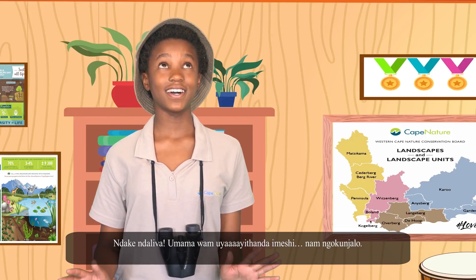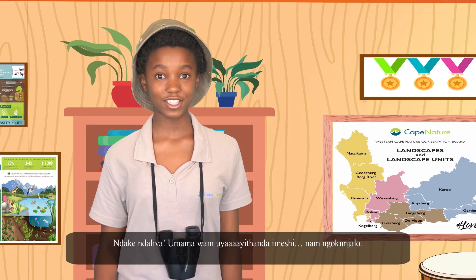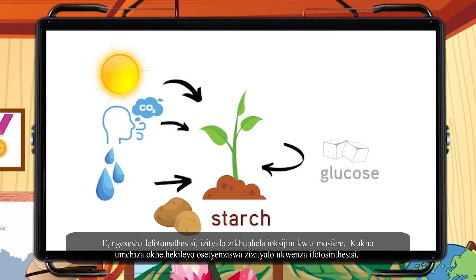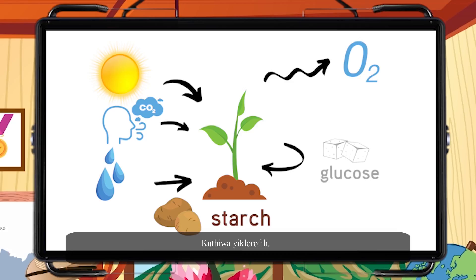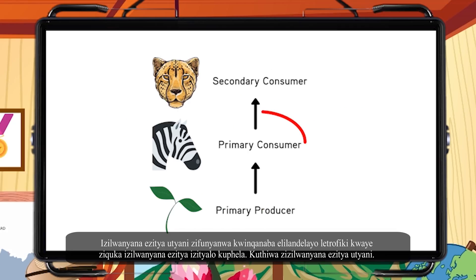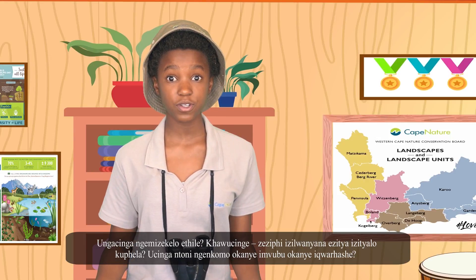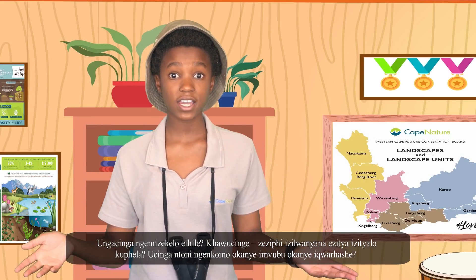During photosynthesis, plants give off oxygen into the atmosphere. There's a very special chemical that plants use to photosynthesize — it's called chlorophyll. Primary consumers are found at the next trophic level and include animals that eat only plants. They're called herbivores — can you think of some examples?